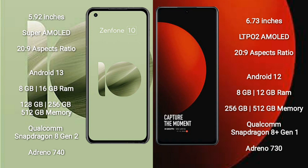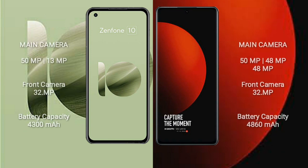Xiaomi 12s Ultra comes with 8GB or 12GB RAM and 256GB or 512GB internal storage, powered by a Qualcomm Snapdragon 8 Gen 1 processor and GPU Adreno 730. Asus Zenfone 10 features a dual rear camera setup: 50MP plus 13MP, and a front camera of 32MP.